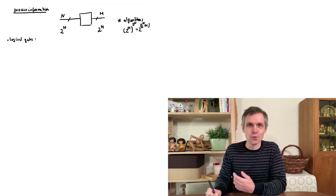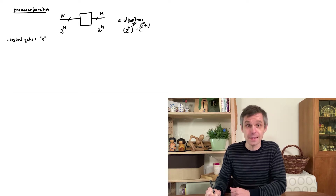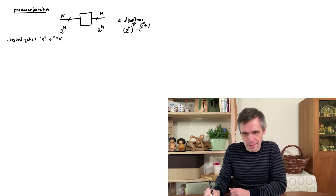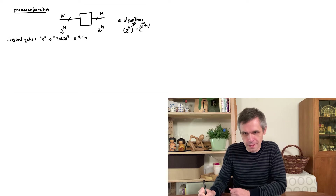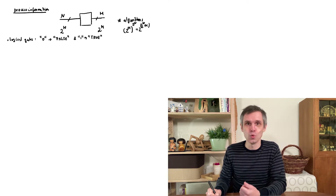Logical gates involve two elements. First, we represent the different bits in a logical way: zero we will interpret as a false statement and one we will interpret as a true statement. Secondly, we can then apply logical operations — so-called Boolean algebra — to individual bits or pairs of bits.